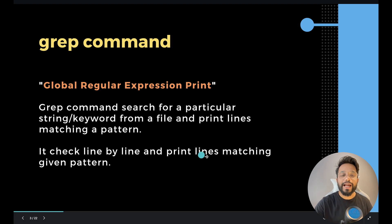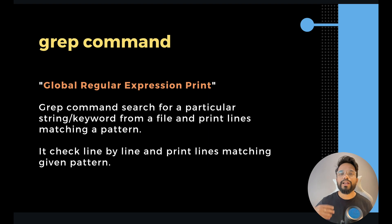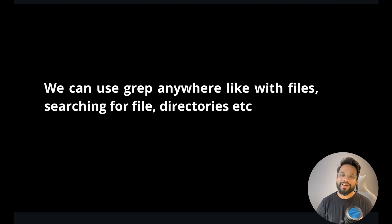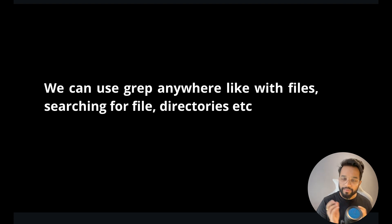It checks line by line and prints the lines matching with the given pattern. In simple terms, you can search for a string, keyword, or pattern in a file and get the related output only. Apart from files, we can also use the grep command in combination with other commands — we will see an example.